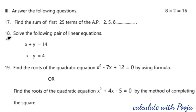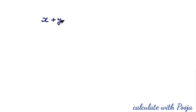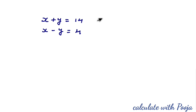Next, question 18: solve the following pair of linear equations — x + y = 14 and x − y = 4. These are equation 1 and equation 2. We can use cross multiplication, elimination, or substitution method. Here I am going to use elimination method.